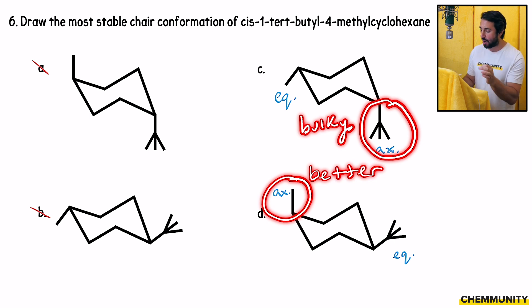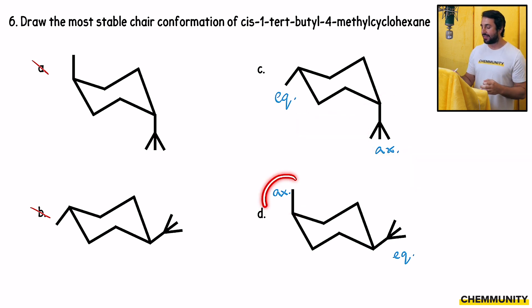The methyl group is much smaller. So it will produce diaxial interactions, but much less so. It will be much more stable. The configuration in D, that will be the more stable chair conformation of this molecule, of the two that were possible. Every chair will have two chair conformations. And then A and B didn't work because they were trans, not cis. So they were not examples of the molecule in question.